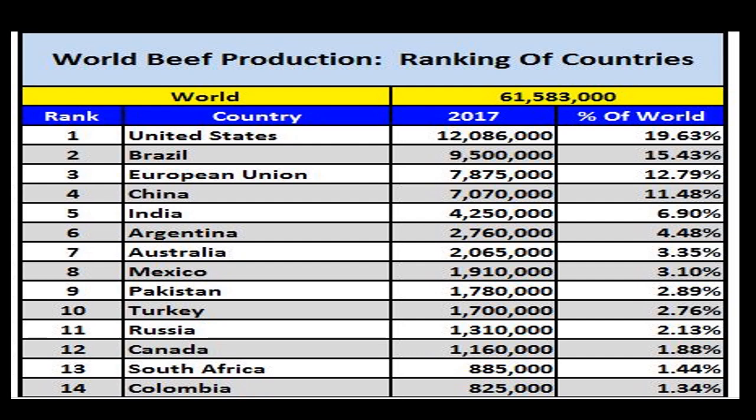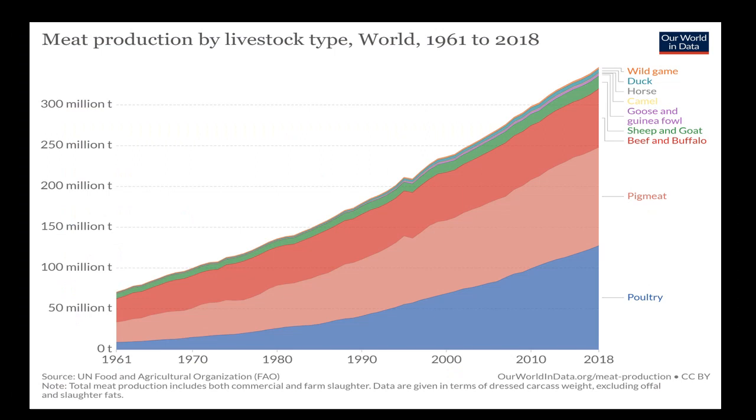Here is the list of world top beef producer countries up to 2017. The United States is the largest producer of beef in the world, followed by Brazil and the European Union. India ranked fifth whereas Pakistan ranked ninth on this chart, meaning Pakistan is in the top 10 countries. This is another interesting chart showing meat production by livestock species.